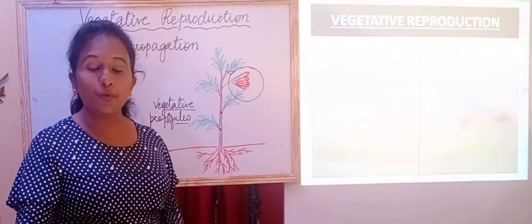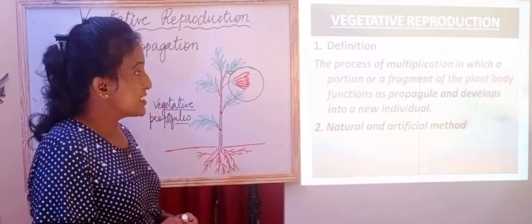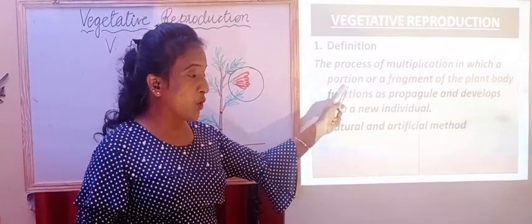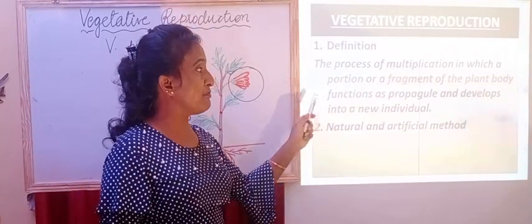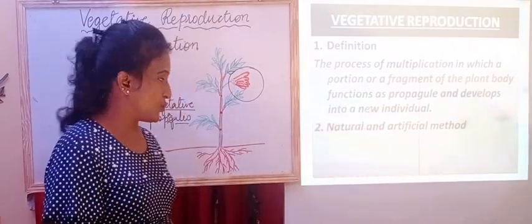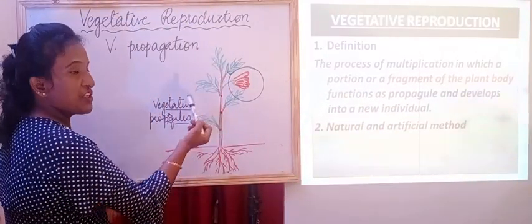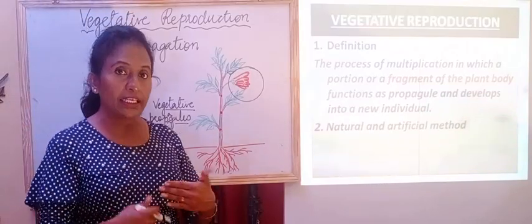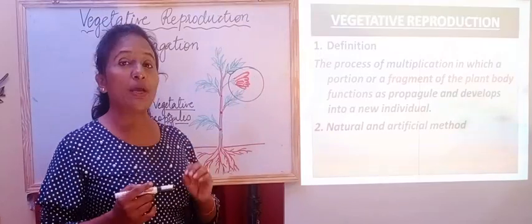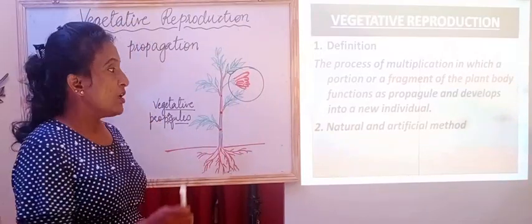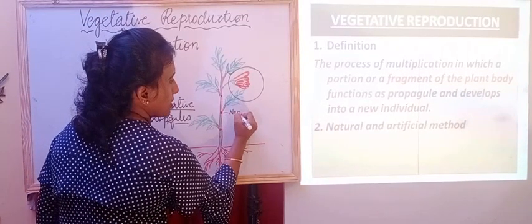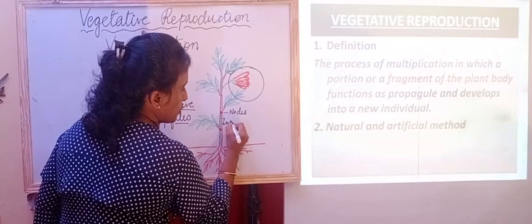How do we define vegetative reproduction? It is the process of multiplication in which a portion or a fragment of plant body functions as a propagule and develops into an individual. So these vegetative propagules will develop later into a new individual. That is called as vegetative reproduction.